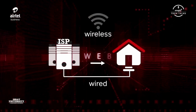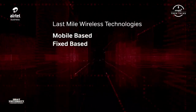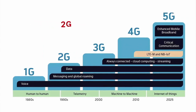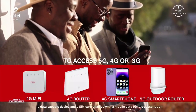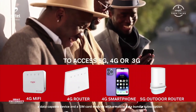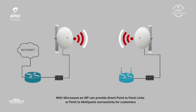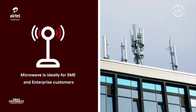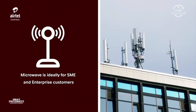The last mile technology can be wireless or wired depending on geographic location, application type, security level, internet speed, and bandwidth capacity needed. Mobile wireless technologies include 3G, 4G LTE, and 5G — with G standing for generation. The higher the G, the better the speeds and services. Customers need a data-capable device and a SIM card with a mobile data subscription. Microwave technology provides fixed-wireless last-mile connectivity — ideal for SME and enterprise customers who need dedicated capacity and better quality of service that mobile options can't guarantee.